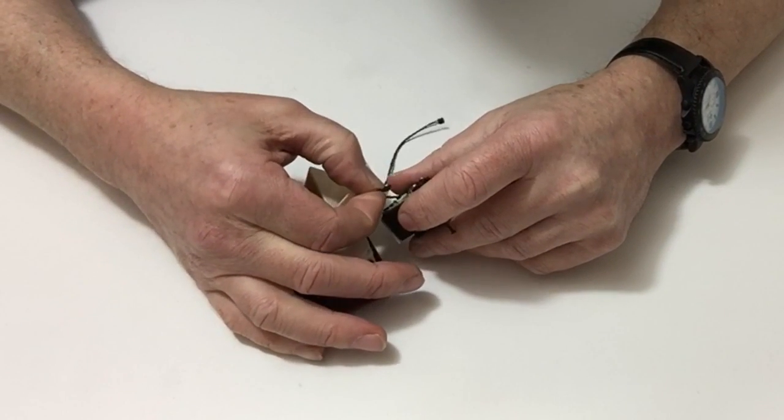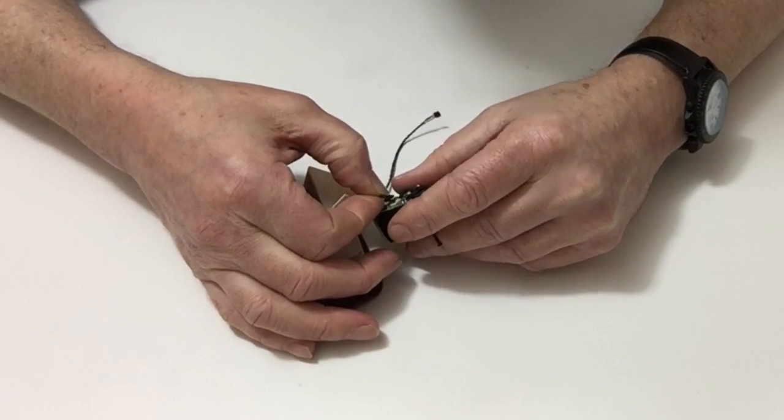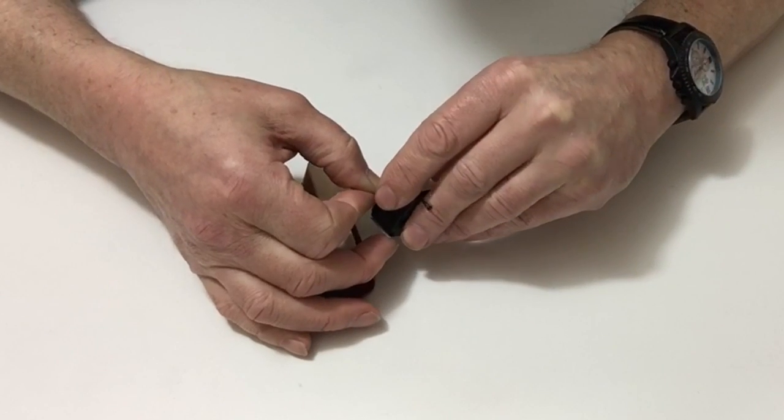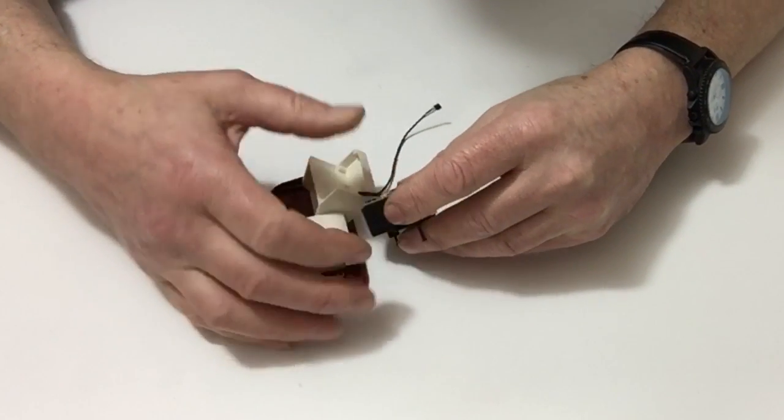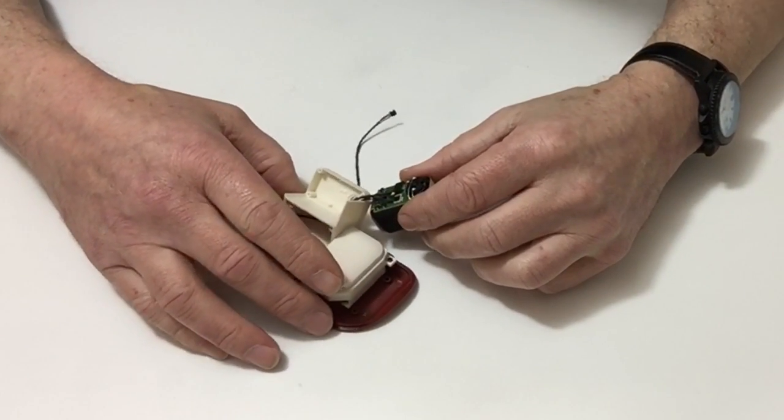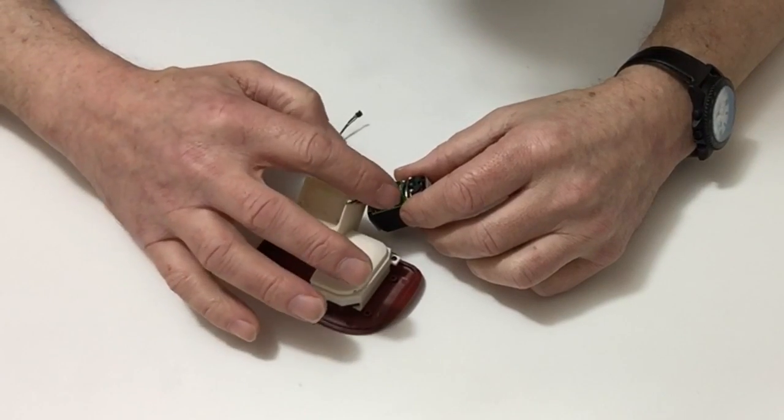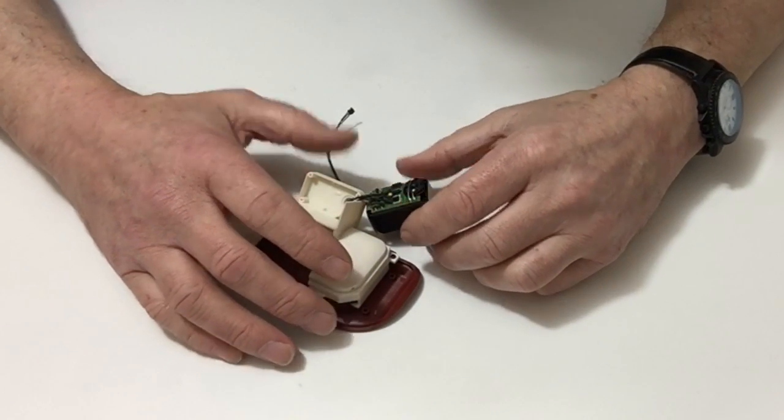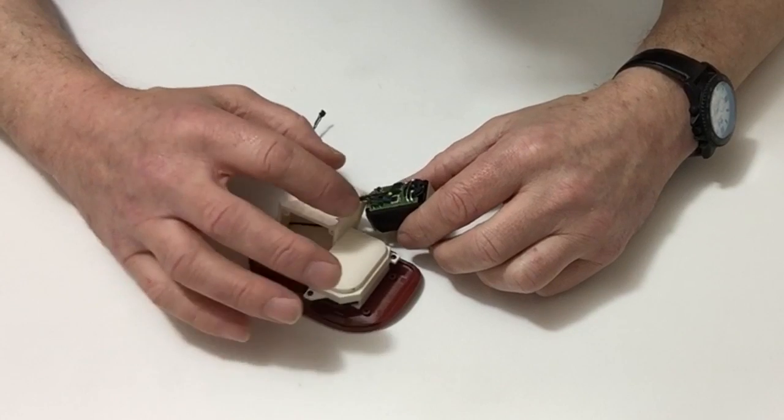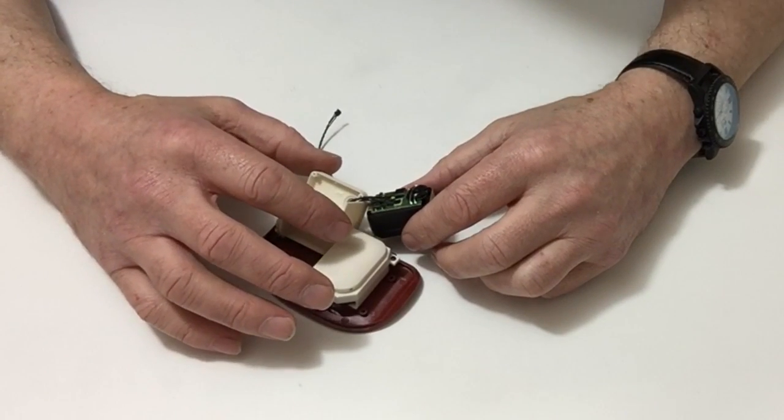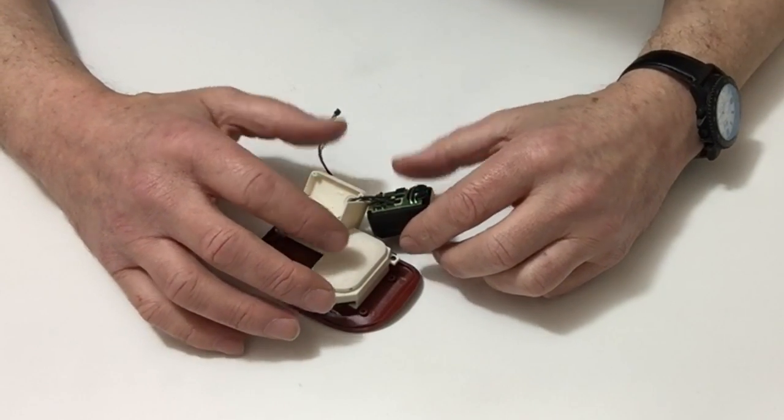Once you have done that, get some of your little tape blocks and stick that over the top. Then once you have done that, secure it down into the ankle joint.